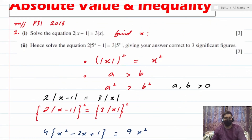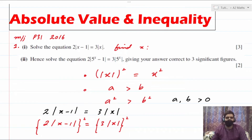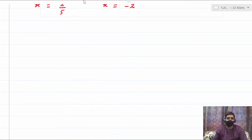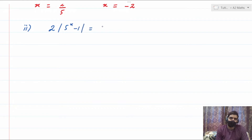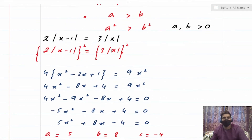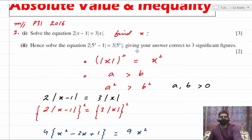Let's move to the second part. The question says: hence solve 2|5^x − 1| = 3|5^x|. So instead of x, they've replaced it with 5^x. You can see the similarity with the previous equation — all they've done is replace the variable x with 5^x.